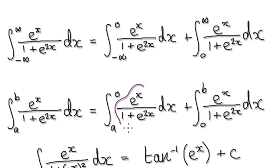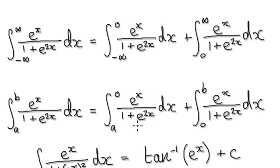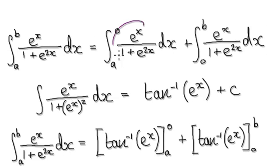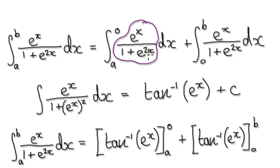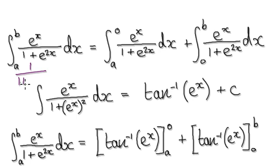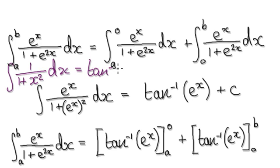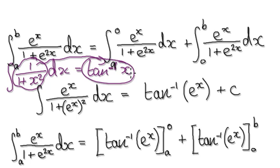Now it just boils down to us trying to integrate this. You would rewrite this as something squared. By now you should train yourself to recognize that if you write it in this form, this is now of the form 1 plus x squared. The minute you see this, you should know that to integrate this it would be arctan of x. Anytime you see something of this form, to integrate it you would get arctan of x.